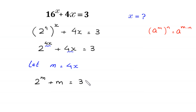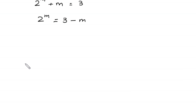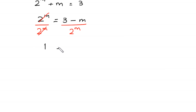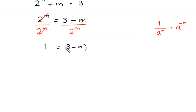We move the plus m to the right side, giving 2 to the power m. Then we divide both sides of this equation by 2 to the power m. This 2 to the power m cancels, and at the left side we get 1. Using the property 1 over a to the power n equals a to the power negative n, we write the right side as 3 minus m times 2 to the power negative m.